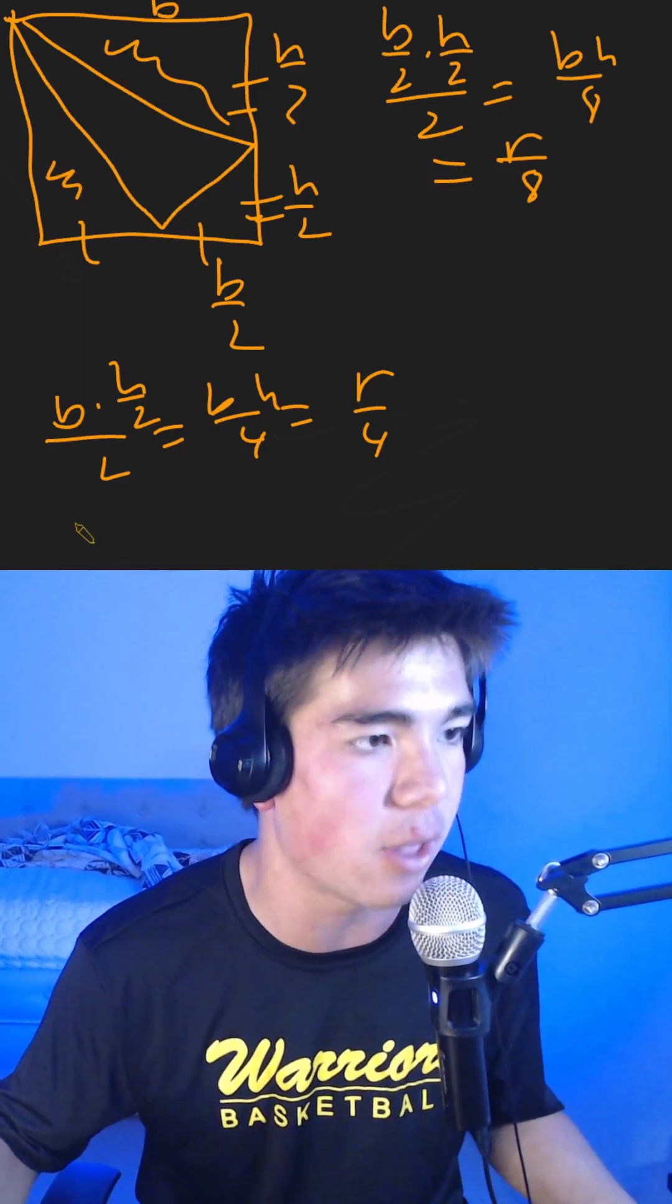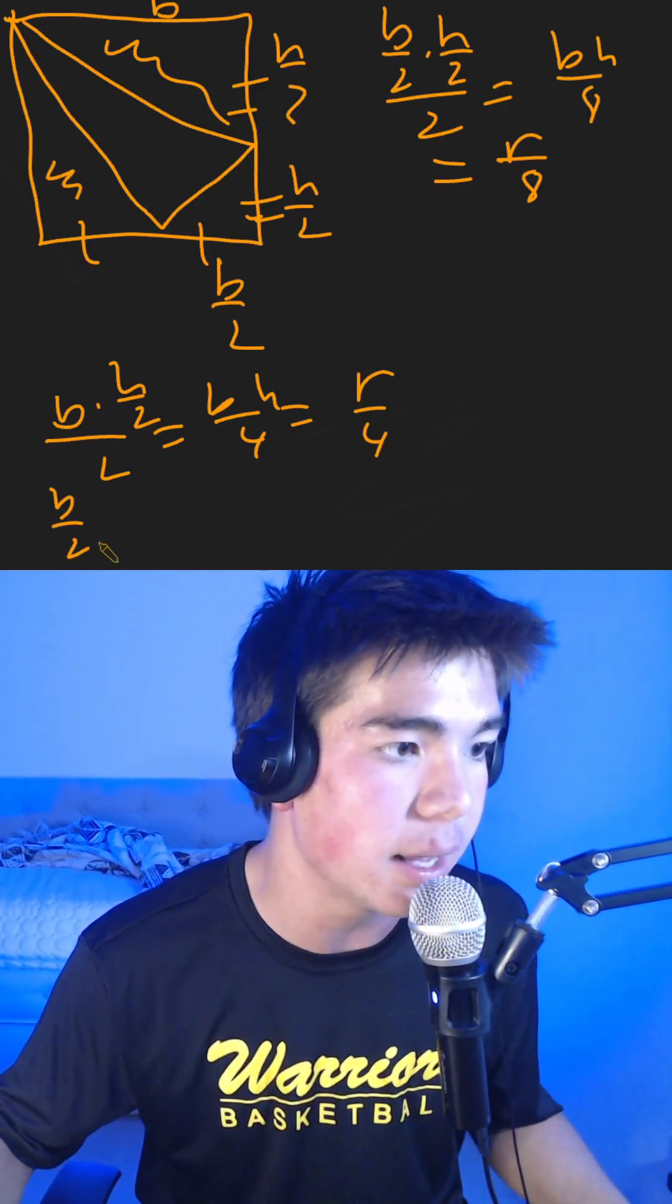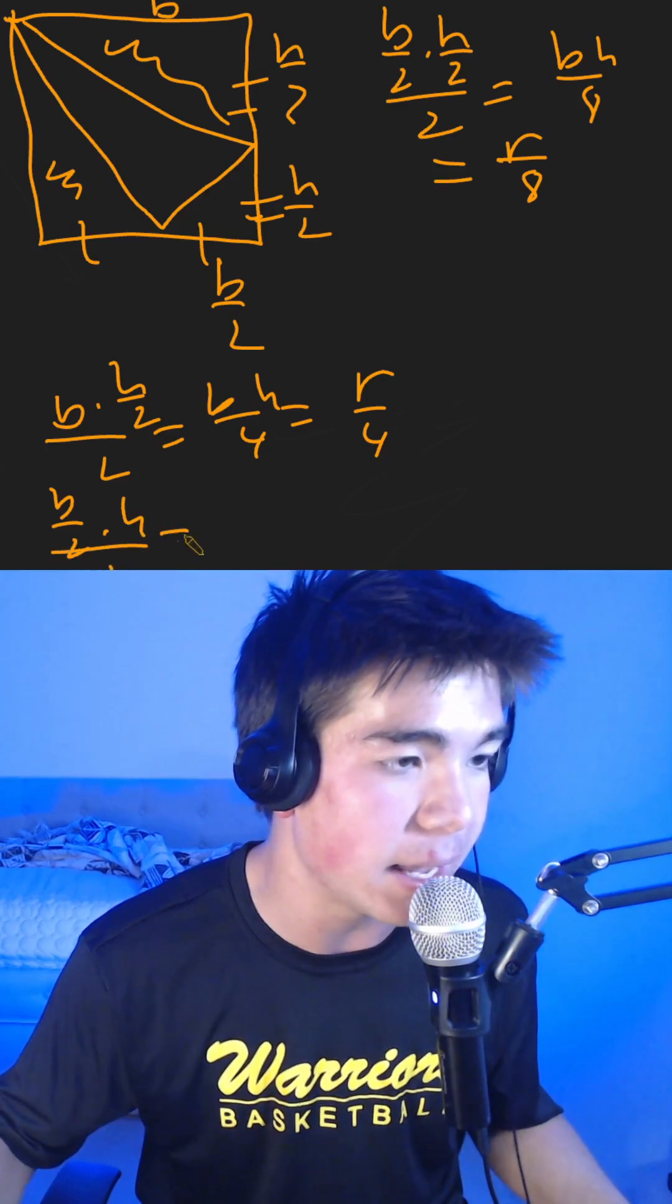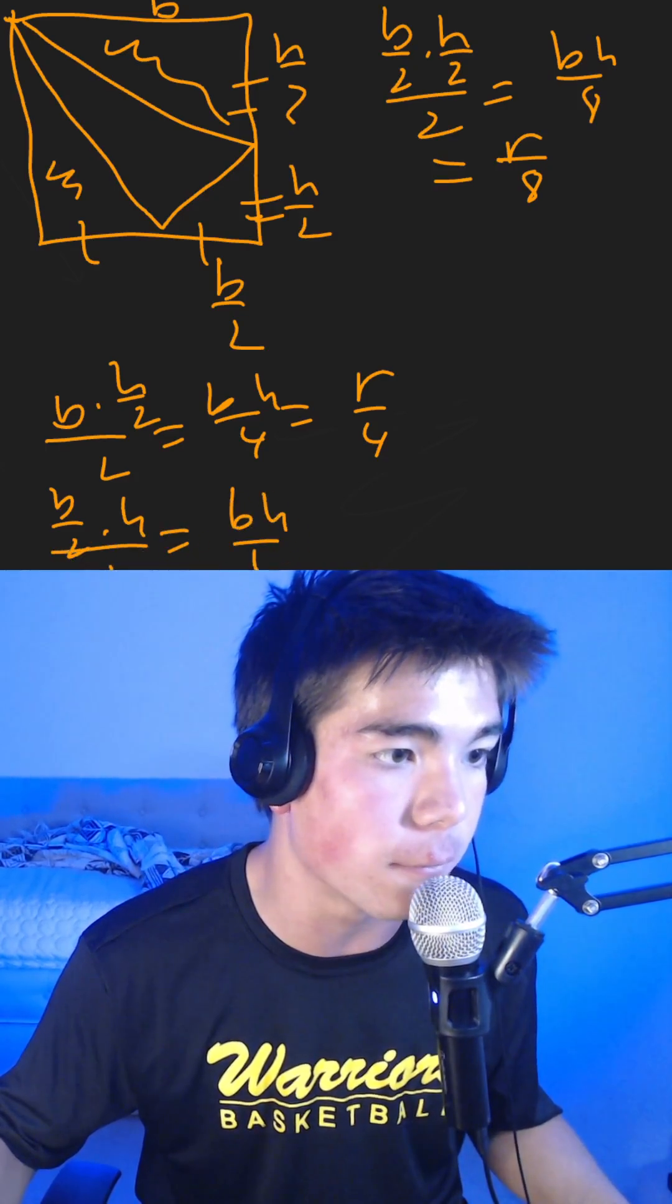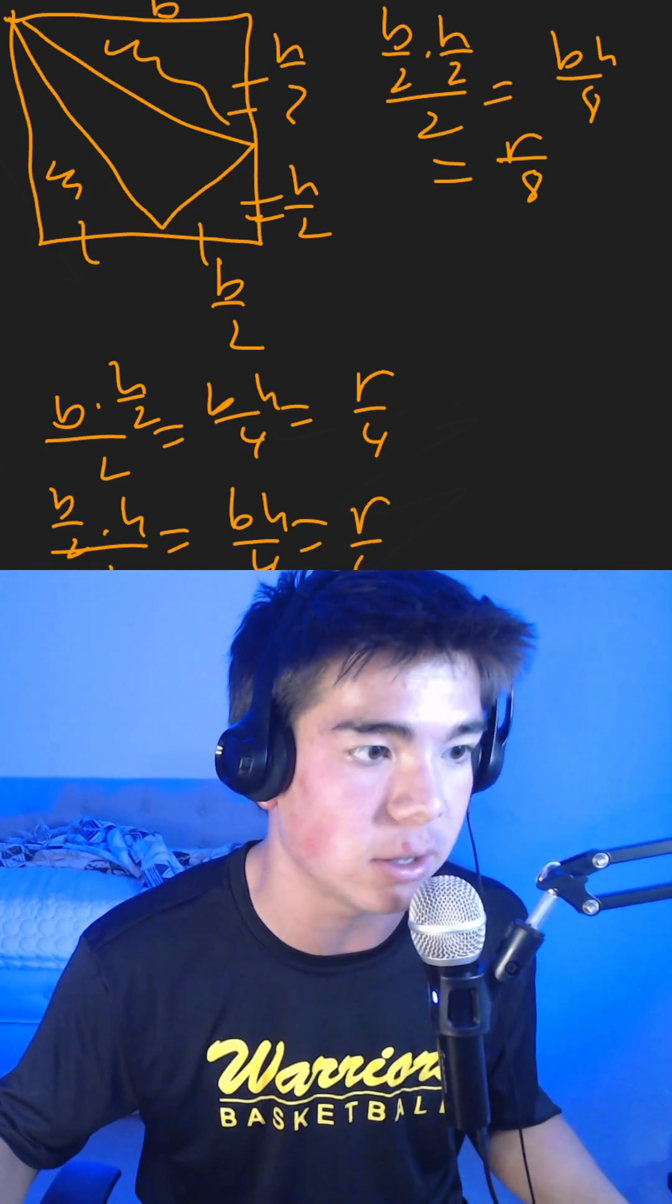Now for the last triangle, and this is very similar to the other ones. We have base over 2 times height, divided by 2, is equal to base times height over 4, which is equal to the area of the rectangle divided by 4.